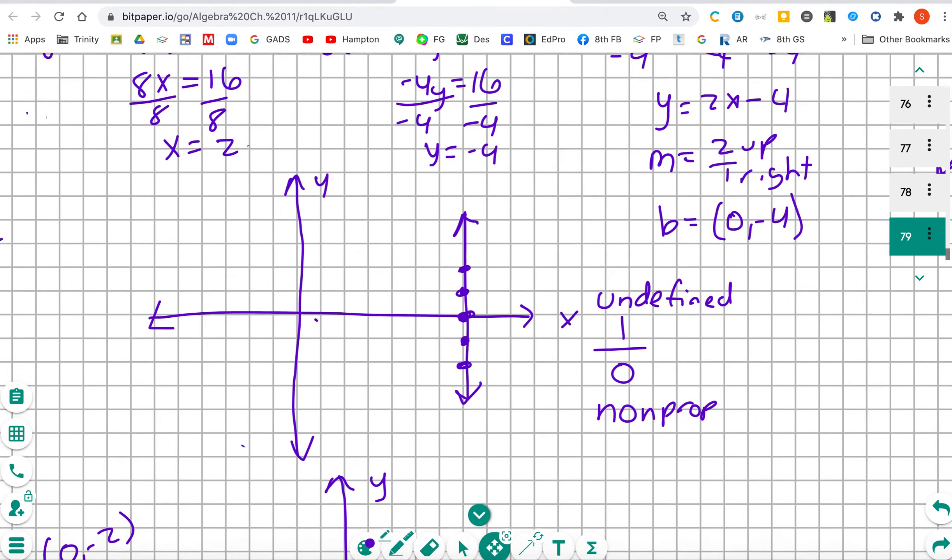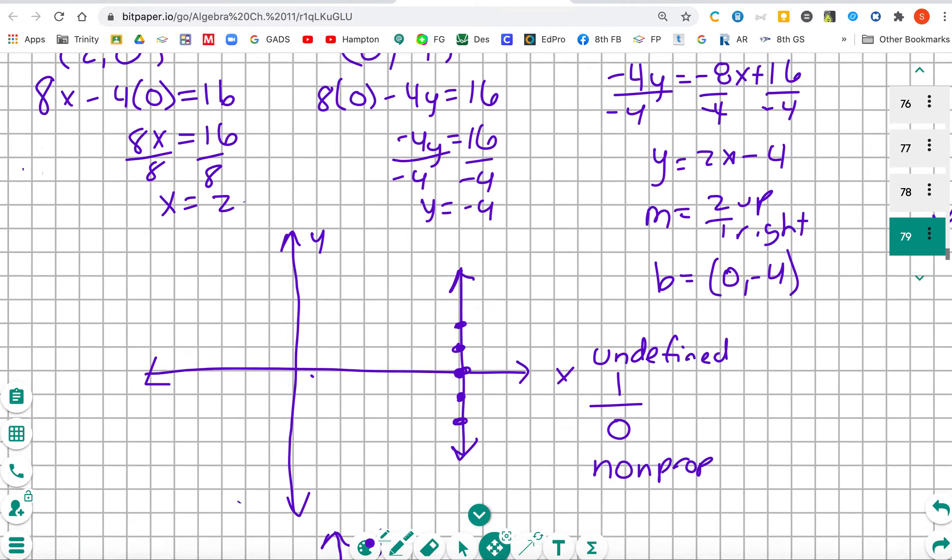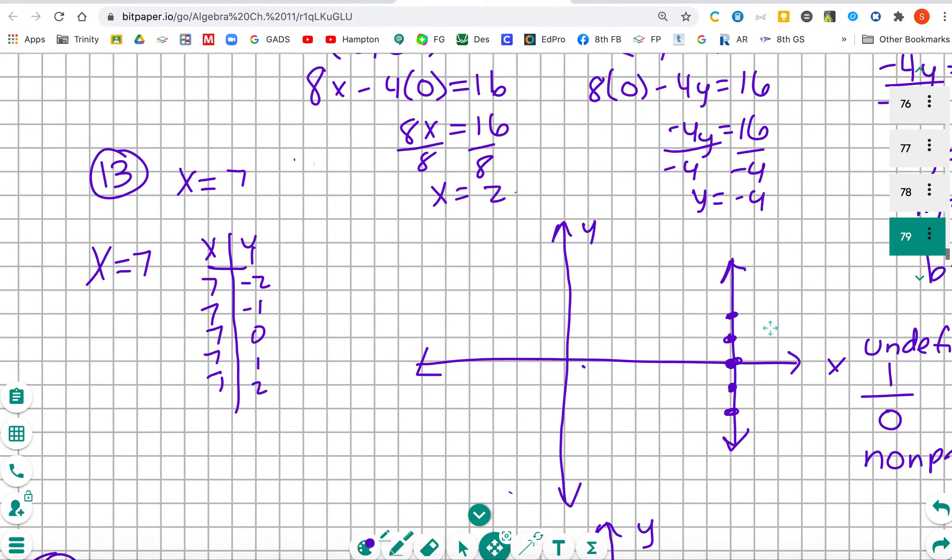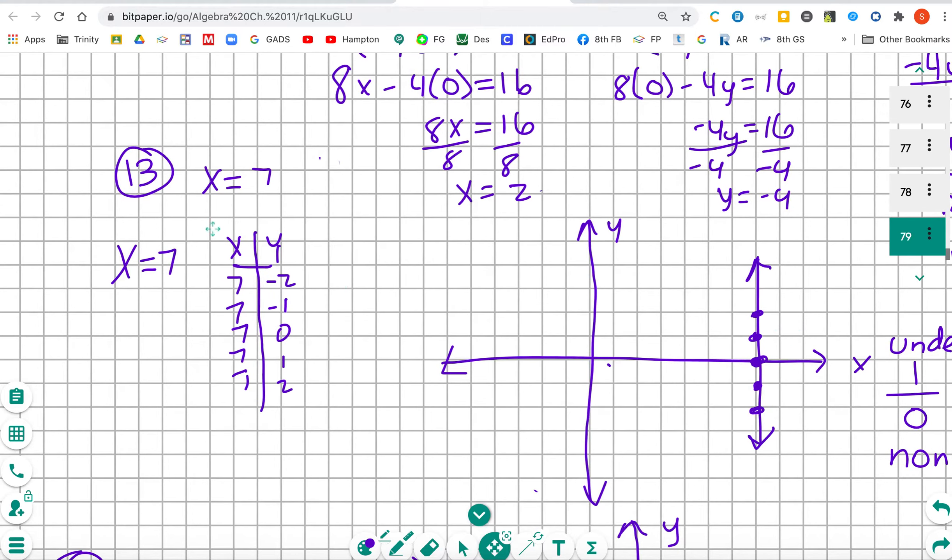So number 13, we are graphing x equals 7. Now you'll notice that you don't see a y, therefore you have to have a table.